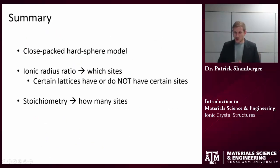We've thought about ionic structures. We've talked about how they also follow a close-packed hard sphere model. But the two important things: ionic radius ratios are going to tell you which sites are occupied. Are those cations sitting in cubic sites, octahedral sites, tetrahedral sites?